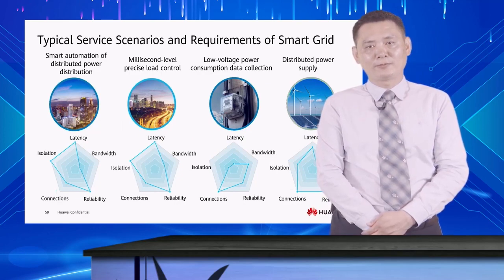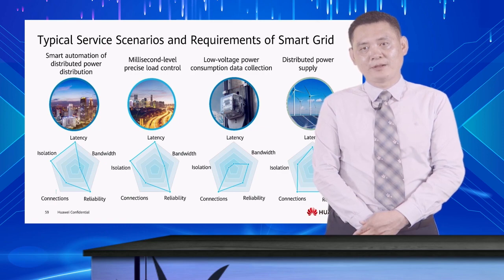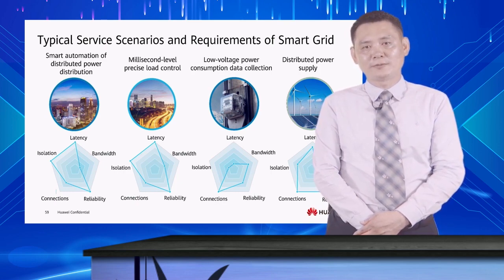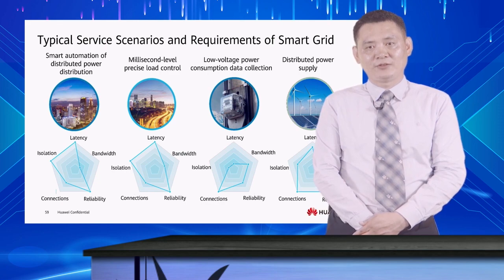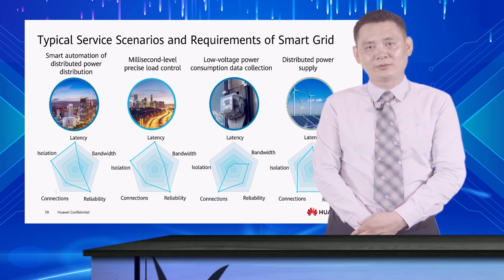Here are some typical service scenarios of the smart grid and their performance indicators. Smart automation of distributed power distribution is a service in the production area, requiring high security, isolation, and low latency. Precise load control also resides in the production area, with high requirements on latency, isolation, and reliability. Low-voltage power consumption data collection — the data reporting of electric meters — has higher requirements on network connectivity to support millions of devices in a city. Distributed power supply such as solar power stations has higher requirements on connectivity and reliability, but lower on latency. The communication network must be able to meet the different QoS requirements of these services.